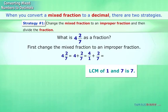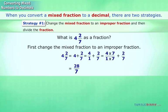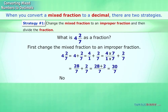So we multiply both the numerator and denominator in 4 over 1 by 7 to get 7 as the denominator. This gives us 28 over 7 plus 2 over 7, which equals 30 over 7.